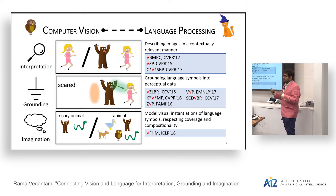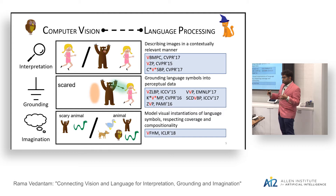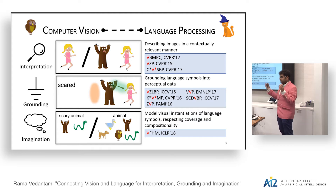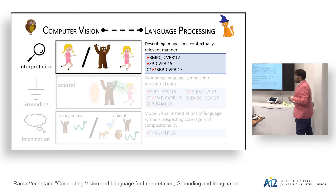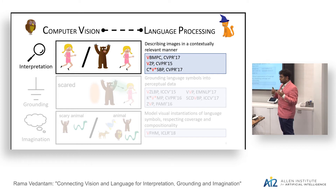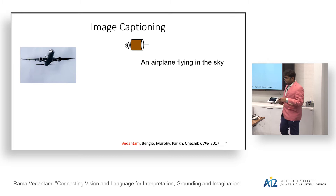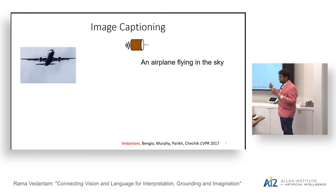For instance, if I say I'm looking for an animal that is scary, I probably generate a specific set of images. But if I say I'm looking for an animal in general — I don't care whether it's scary or not — you should be able to generate a more diverse set of images. Let's first talk about interpretation: how do you describe an image in a contextually relevant manner.